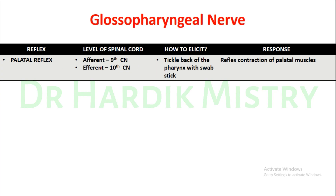For the palatal reflex, the afferent is the 9th cranial nerve (Glossopharyngeal nerve) and the efferent is the 10th cranial nerve (Vagus nerve). To elicit the palatal reflex, tickle the back of the pharynx with a swab stick. The response will be a reflex contraction of the palatal muscle. This test covers the clinical examination of both the 9th and 10th cranial nerves.